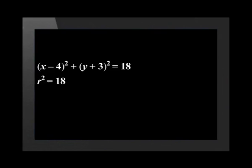Now that we found the center of the circle, let's find the radius. R squared is equal to 18, so r, the radius, will be equal to the square root of 18, which is equal to 3 square root of 2.